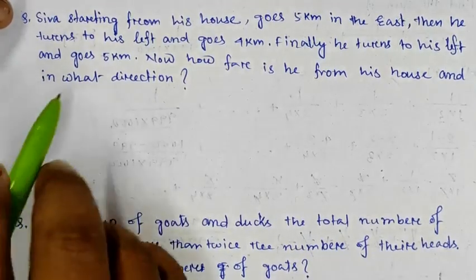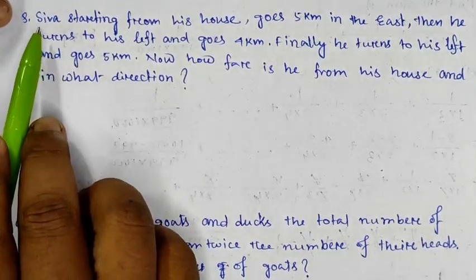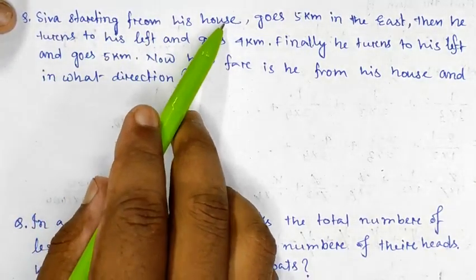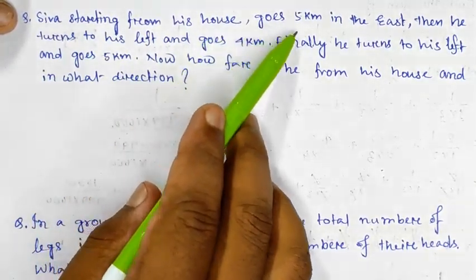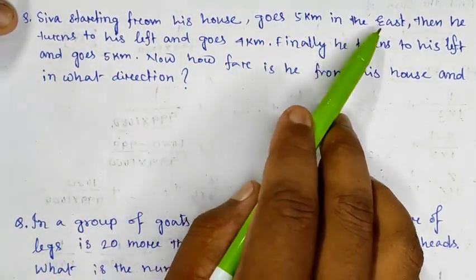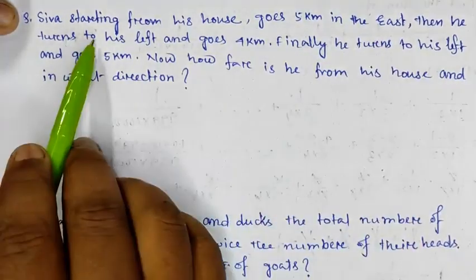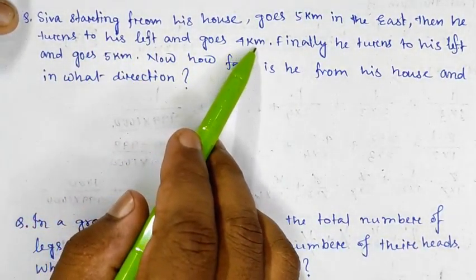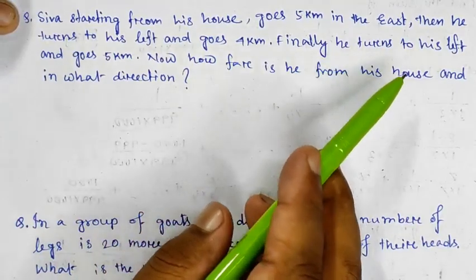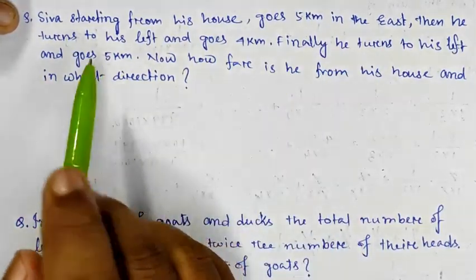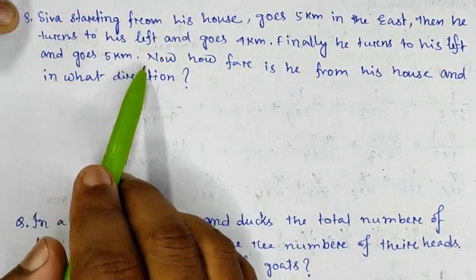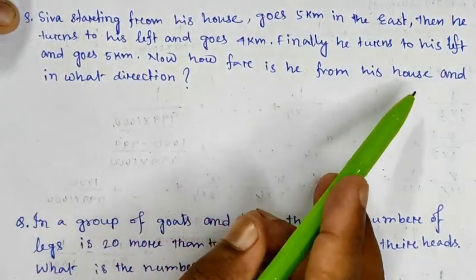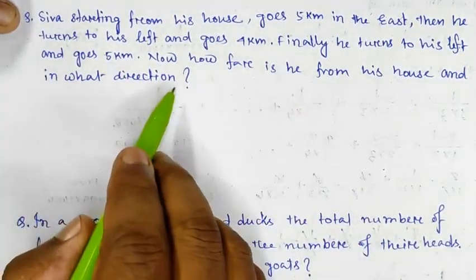The first question is: Shiva, starting from his house, goes 5 km in the east. Then he turns to his left and goes 4 km. Finally, he turns to his left and goes 5 km. Now, how far is he from his house and in what direction?